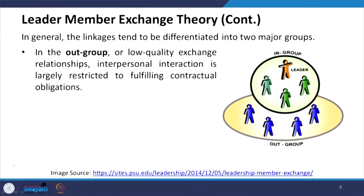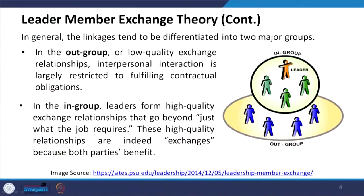In general, the linkages tend to be differentiated into two major groups: the in-group and the out-group. Out-group relationships are low quality exchange relationships where interpersonal interaction is largely restricted to fulfilling contractual obligations. There will be a leader and certain in-group people with higher interaction, while the out-group will have less interaction with the leader.